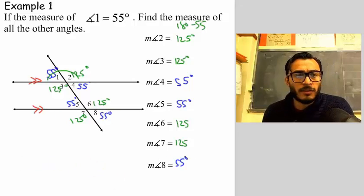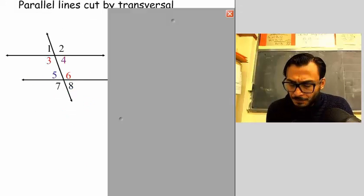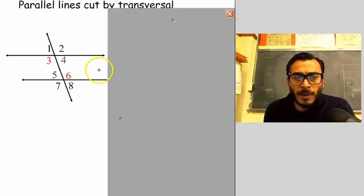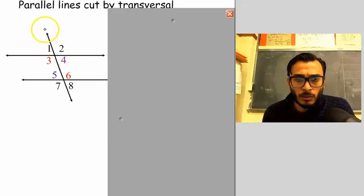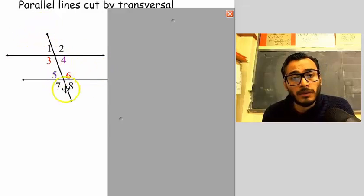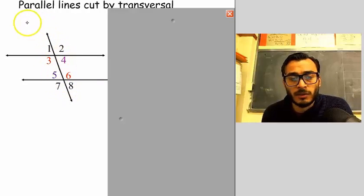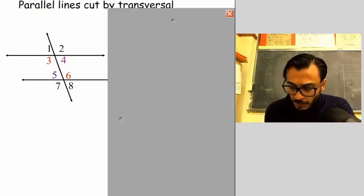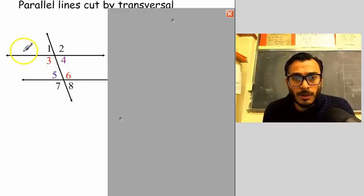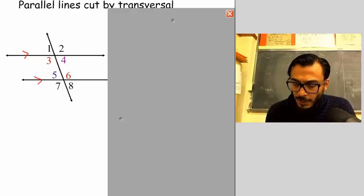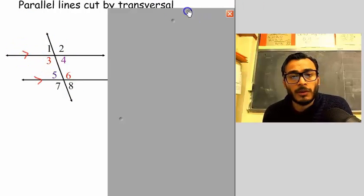So let's give some formal definitions to what we just looked at. We have parallel lines cut by a transversal. Here's the transversal — that's the one that cuts the parallel lines. And these are your parallel lines right here; the arrows tell you that they're parallel.